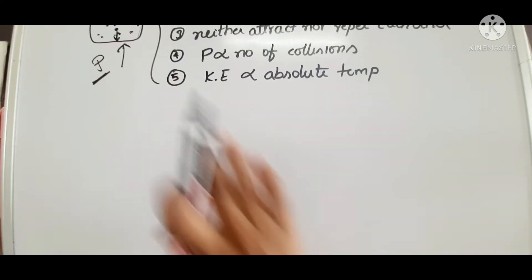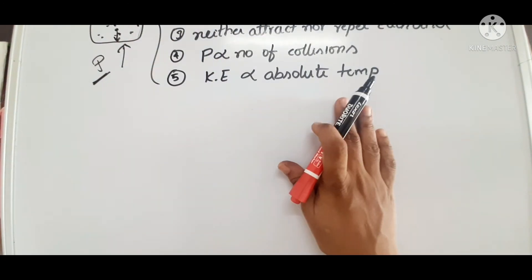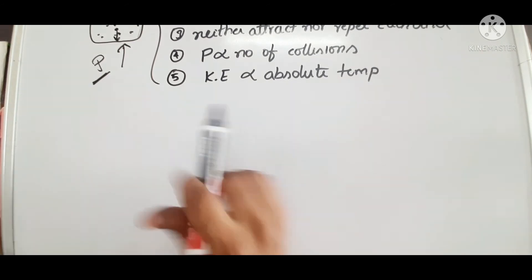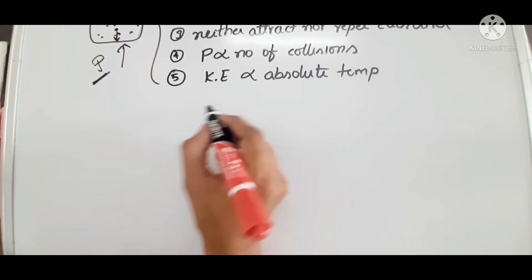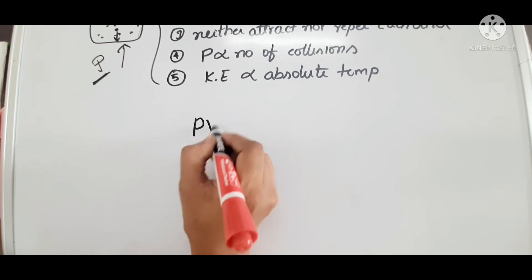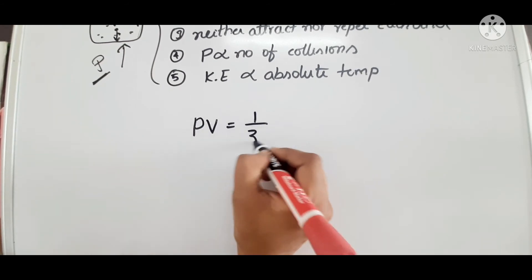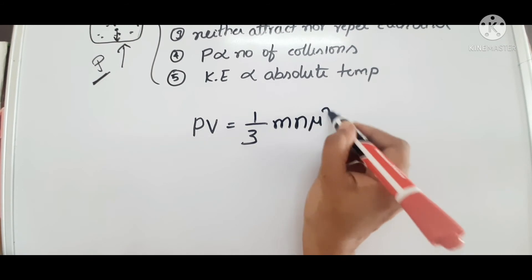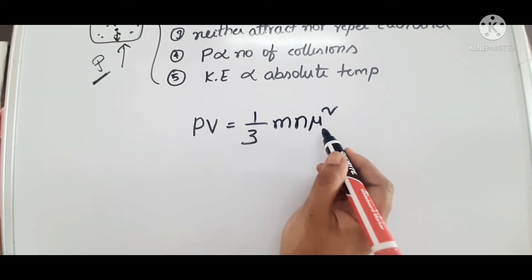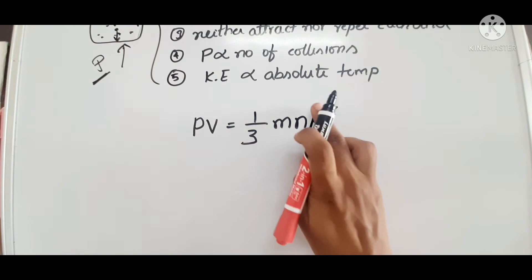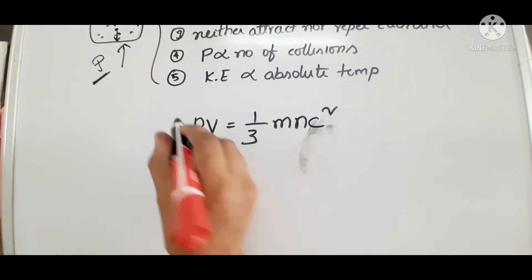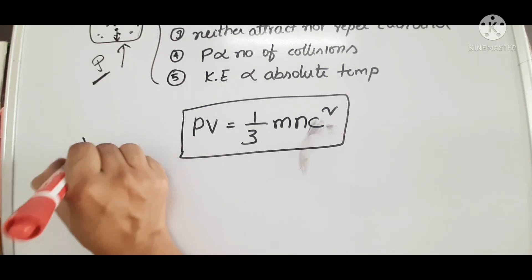From all these postulates, Maxwell, Clausius, Cronin, and Boltzmann — these scientists derived an equation to explain all the postulates. That equation is PV equal to 1 by 3 M N C squared (or mu squared). In some books it is written as C, in some books as mu. This is the kinetic gas equation.